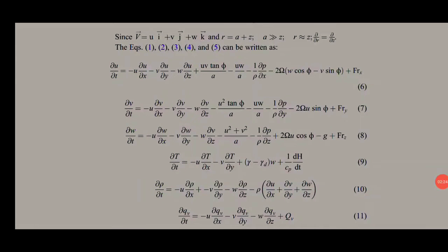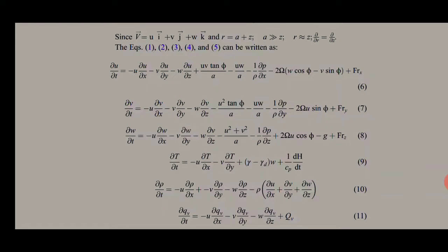These basic equations of an NWP model include terms for friction, heating sources, and evaporation and condensation processes. Specifically, the momentum equation includes the effect of eddy fluxes of momentum. The thermodynamic equation includes radiative heating and cooling, sensible heat fluxes, and condensation and evaporation. The water vapor equation includes condensation, evaporation, and moisture flux. These physical processes represent their contributions, so the model must include surface and planetary boundary layer processes, radiative transfer, and cloud microphysics.